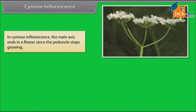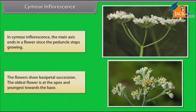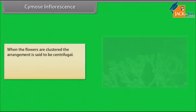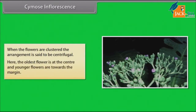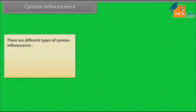In cymose inflorescence, the main axis ends in a flower since the peduncle stops growing. The flowers show basipetal succession. The oldest flower is at the apex and the youngest towards the base. When the flowers are clustered, the arrangement is said to be centrifugal, where the oldest flower is at the center and younger flowers are towards the margin. There are different types of cymose inflorescence.